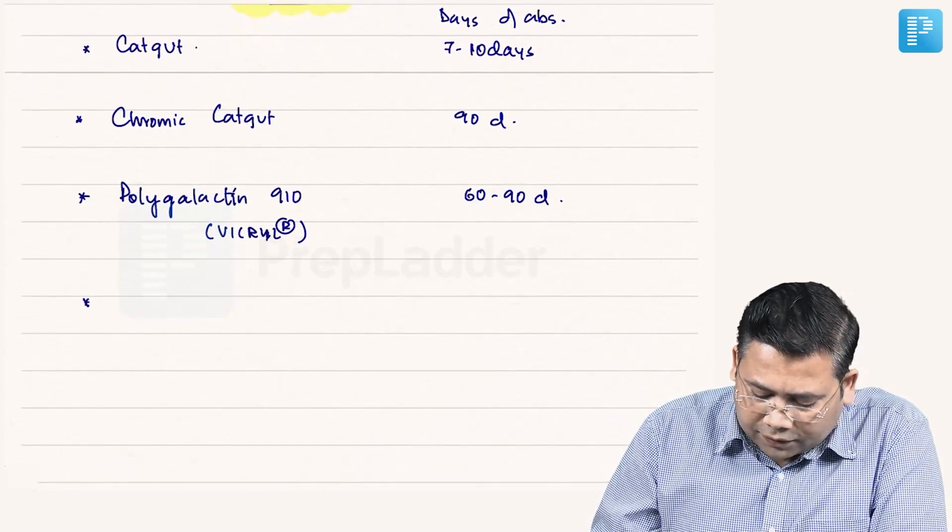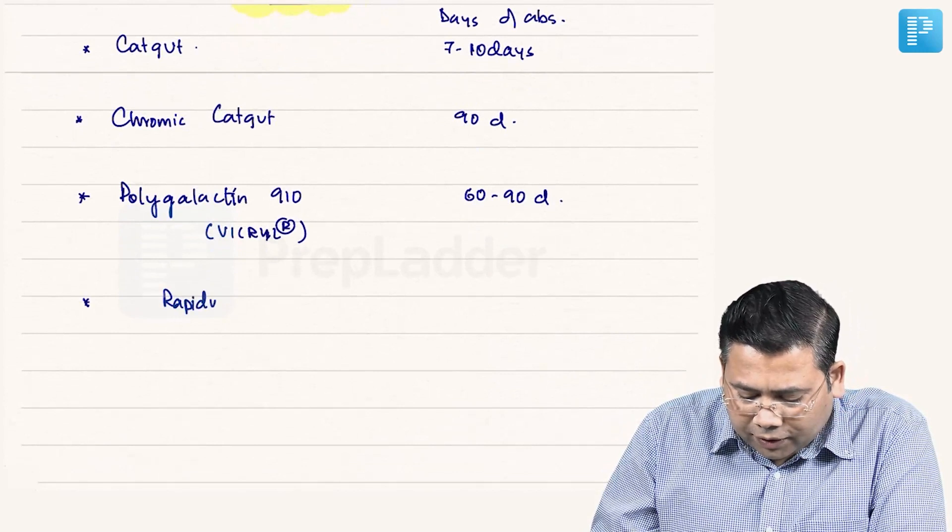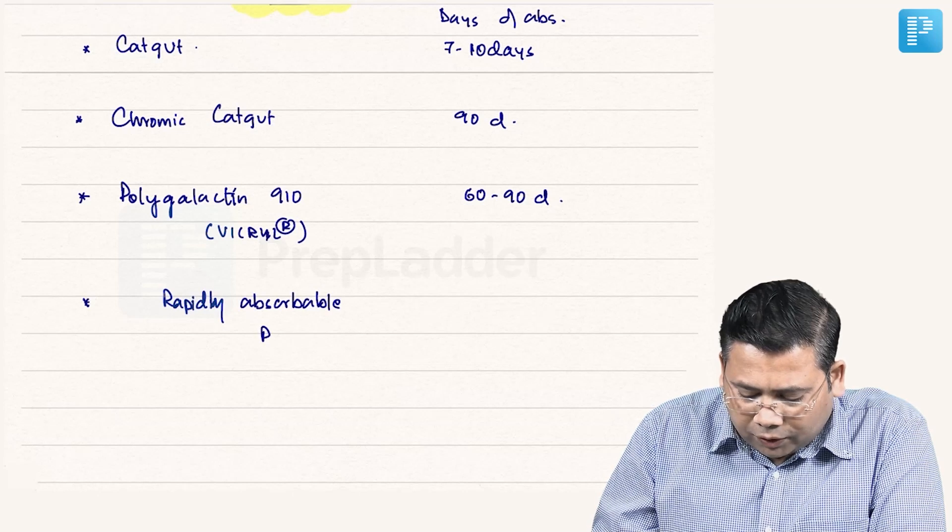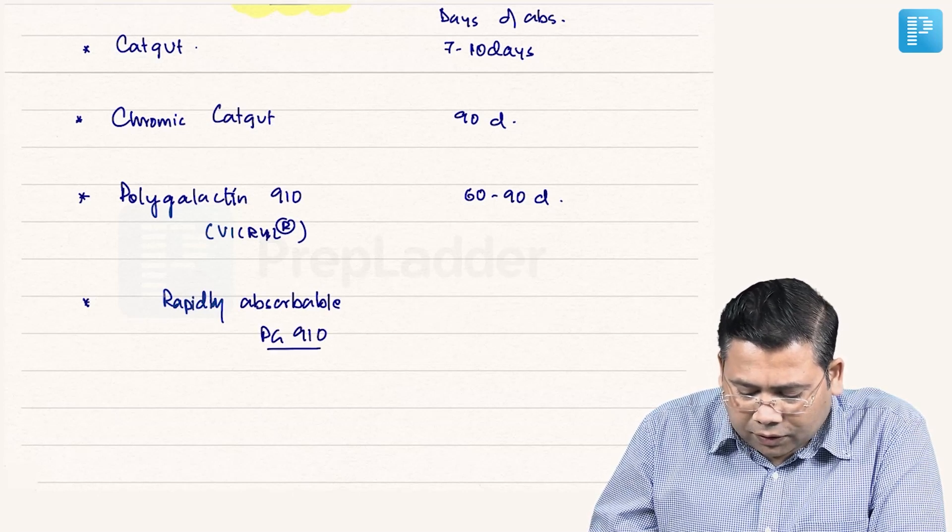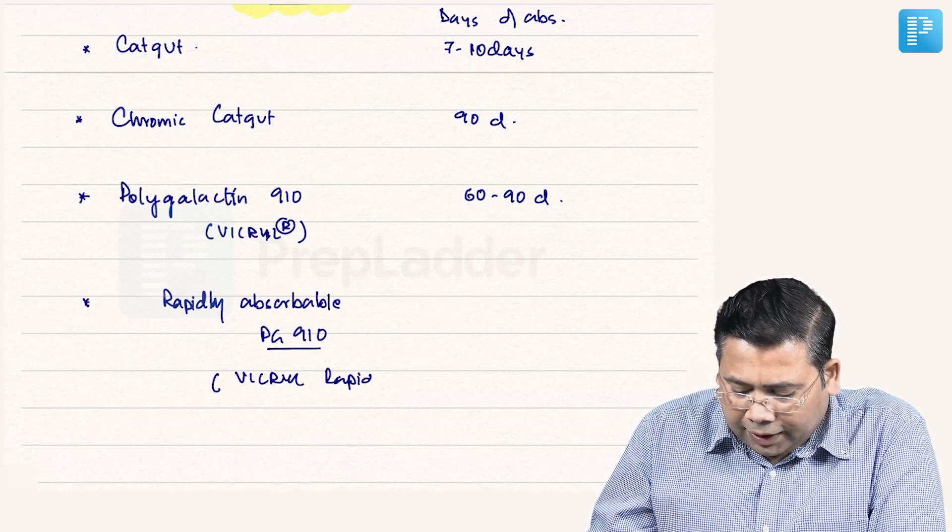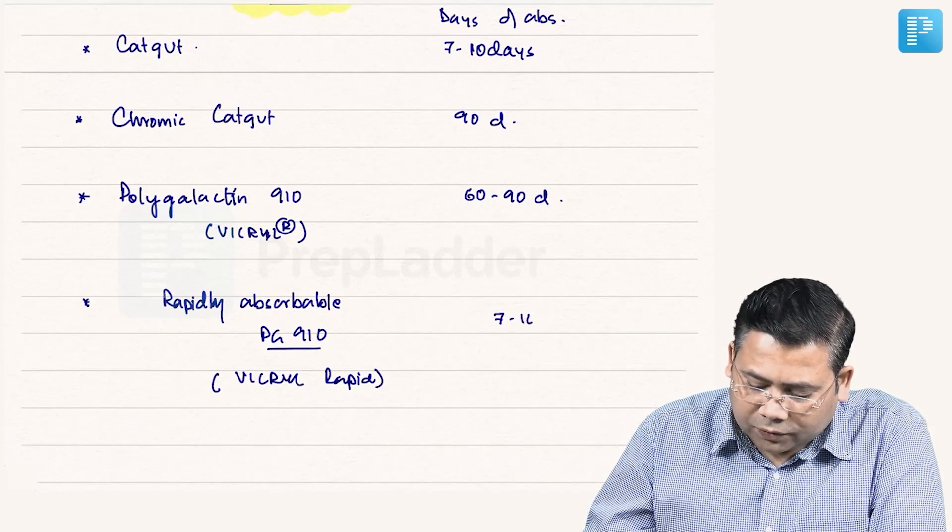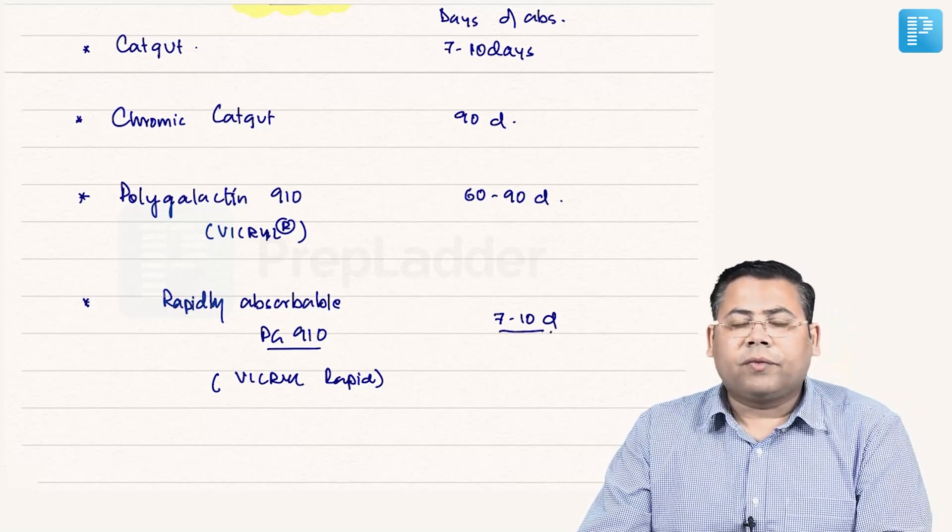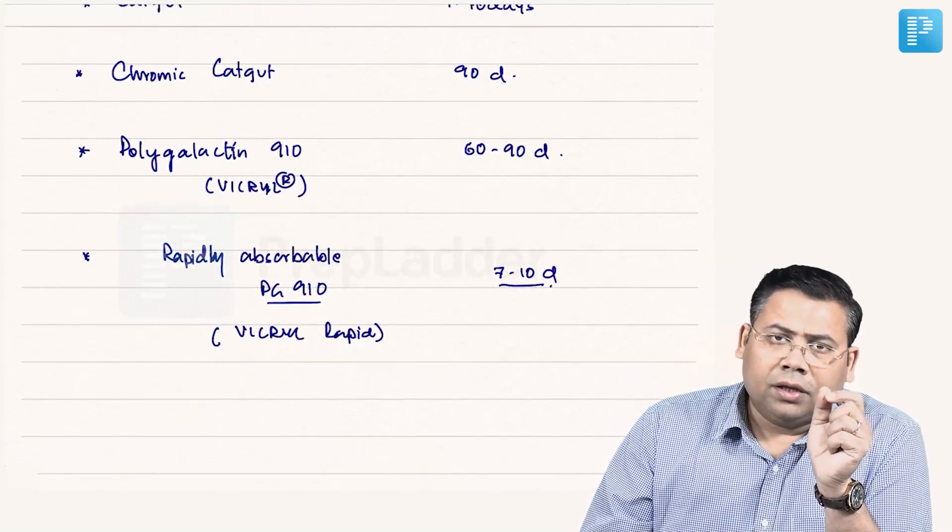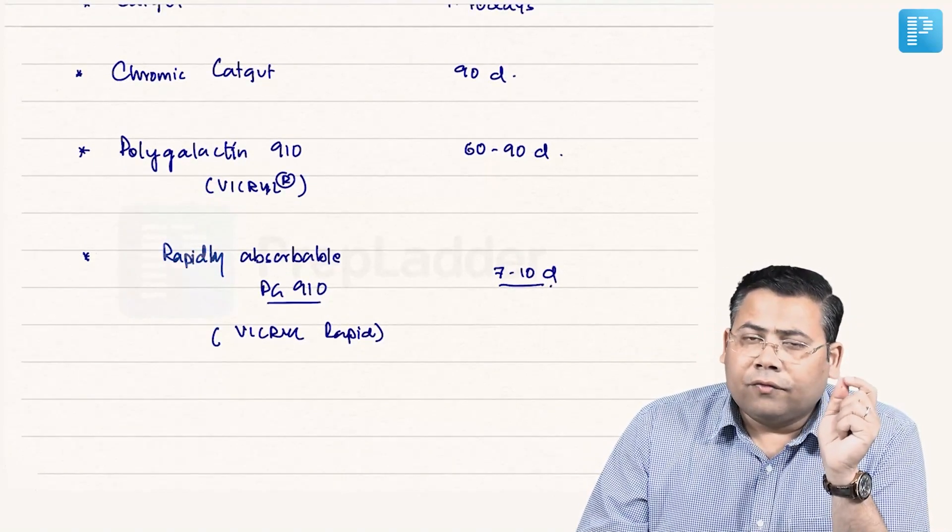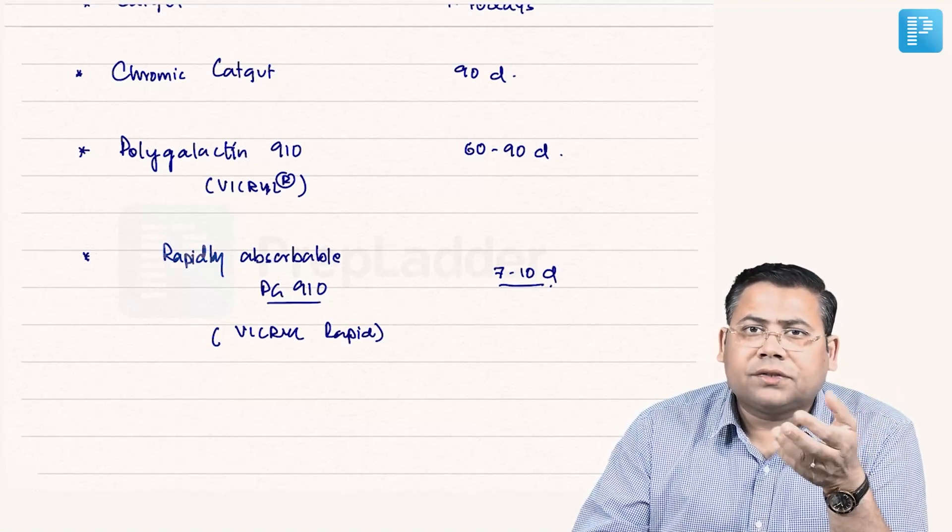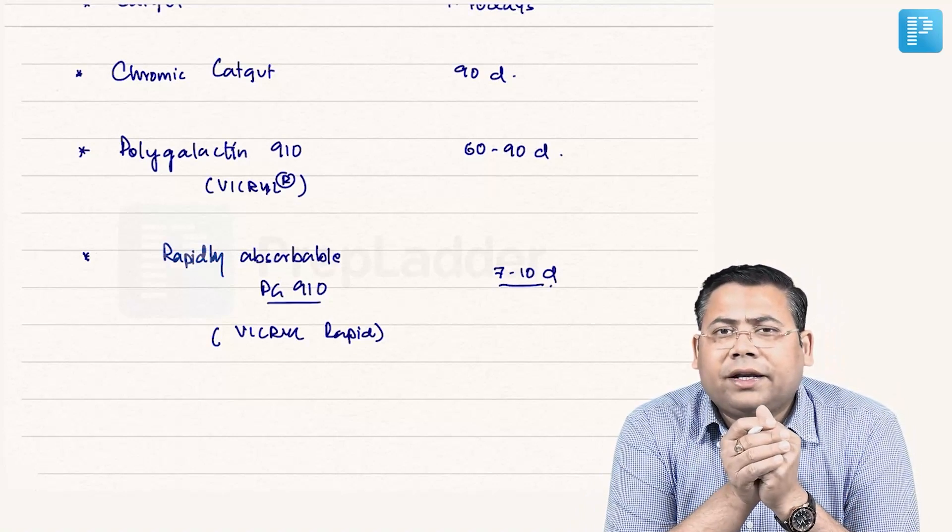Then we have something like rapidly absorbable Vicryl, rapidly absorbable polygalactin 910. Students, this is marketed by the name of Vicryl Rapid and it gets absorbed in 7 to 10 days. There is one controversy, a lot of people say 42 is the day. The point is when you use Vicryl Rapid for surface surgeries, basically it is used for surface surgeries like circumcision, hydrocelectomy.